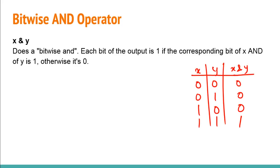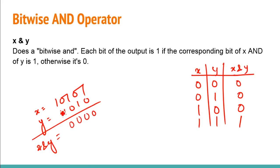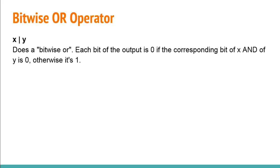Let's take an example with two binary numbers x and y. Simply check each pair of corresponding bits — if they differ it is zero, only when both are one do you get a one. The output comes out to be 100000.